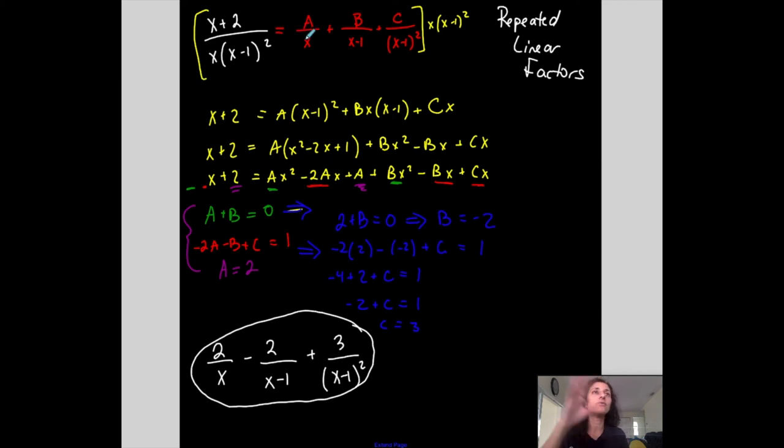So this was an example, obviously, of linear factors and then repeated linear factors. So if you have repeated linear factors, start with a single one of them, and then two of them, and then three of them, and then four of them. However many you have here, you're going to have that many fractions.